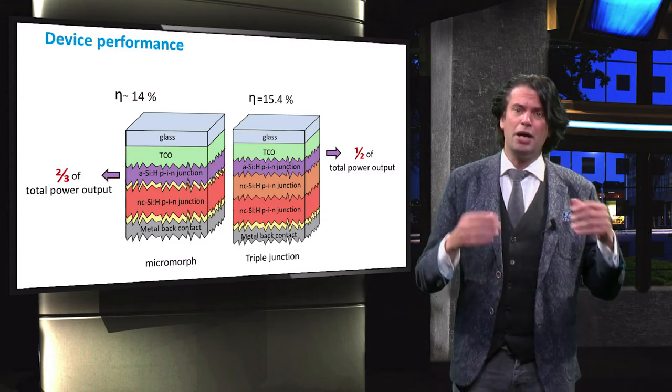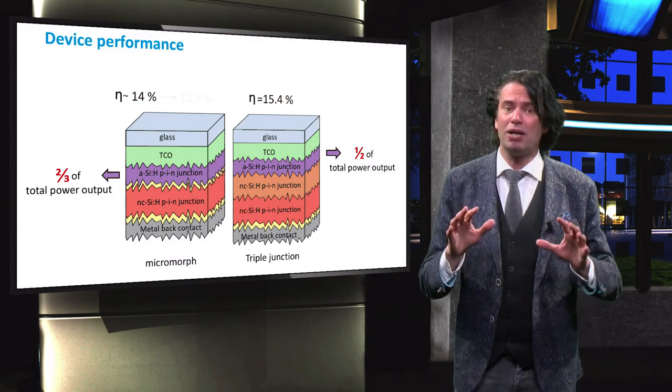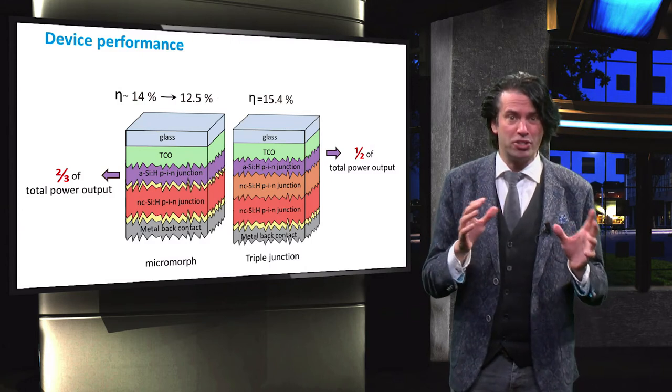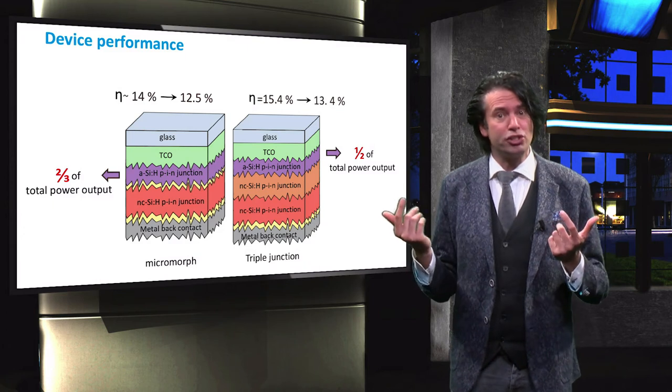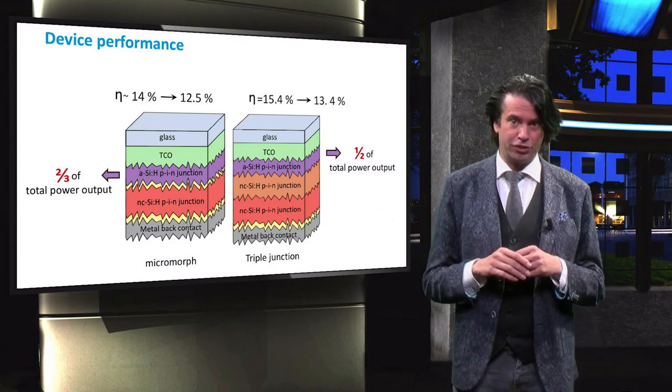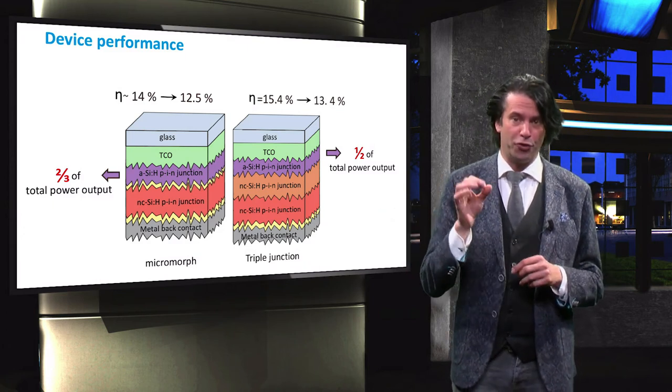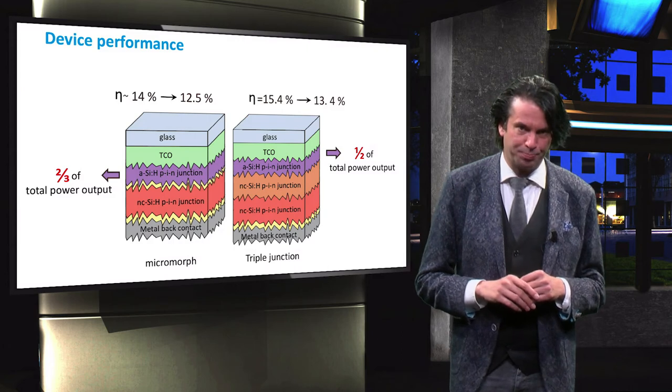Consequently, the micromorph device has a stabilized efficiency of about 12.5 percent, while the triple junction cell has a stabilized efficiency of 13.4 percent. So far we have looked at the effect of light-induced degradation on the performance of amorphous silicon solar cells. In the next video we will continue our discussion of the Staebler-Wronski effect by looking into its origin.